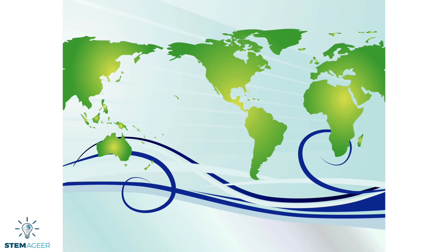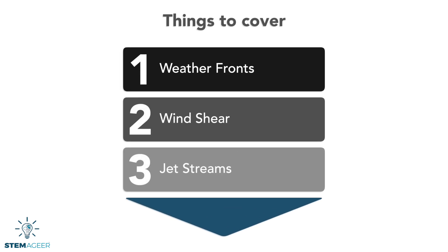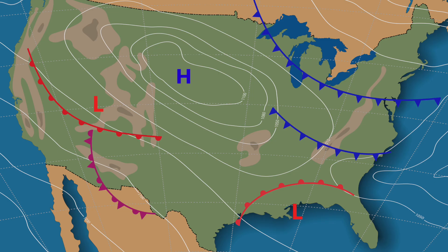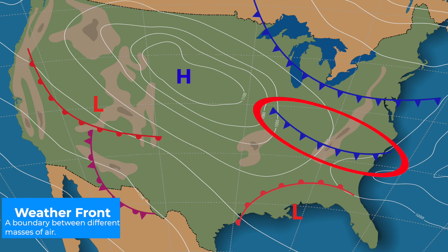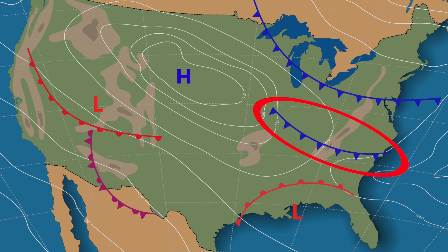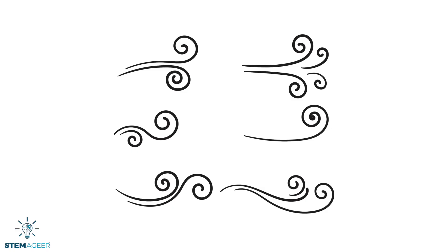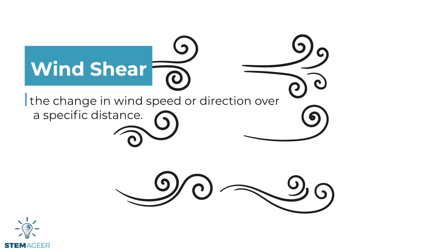You're probably familiar with thunderstorms, so I'll talk a little bit more about weather fronts, wind shear, and jet streams. A weather front is a boundary between different masses of air. When warm and cold air masses come together at a front, friction can result in rough air movement. Wind shear, according to the NOAA, is the change in wind speed or direction over a specific distance that can cause really rough air.